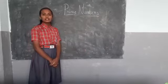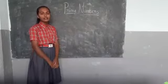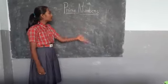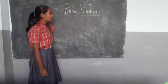Prime numbers means numbers have exactly two factors. One and number itself is called as prime numbers. Now I am showing you some examples.